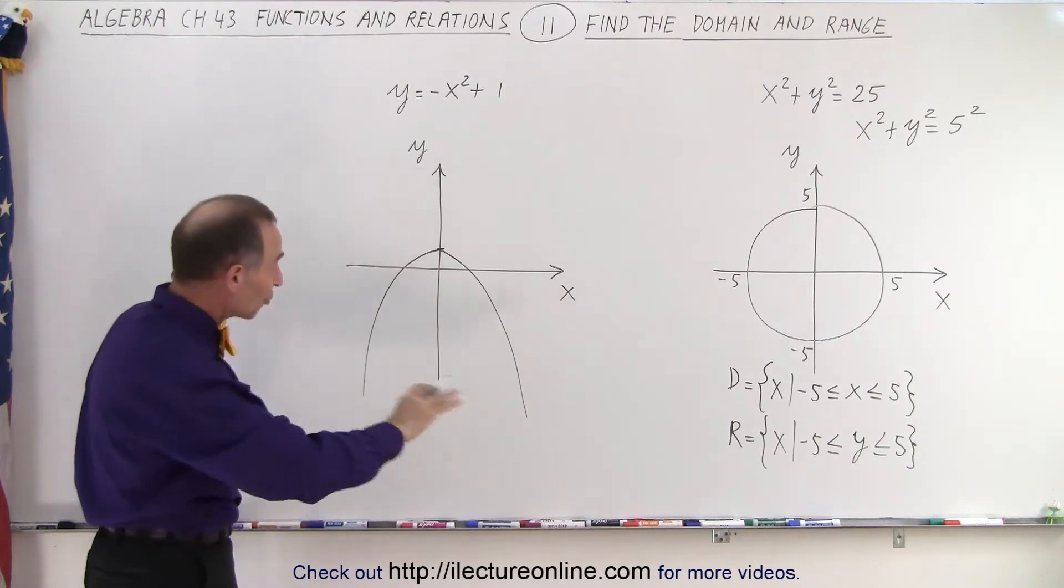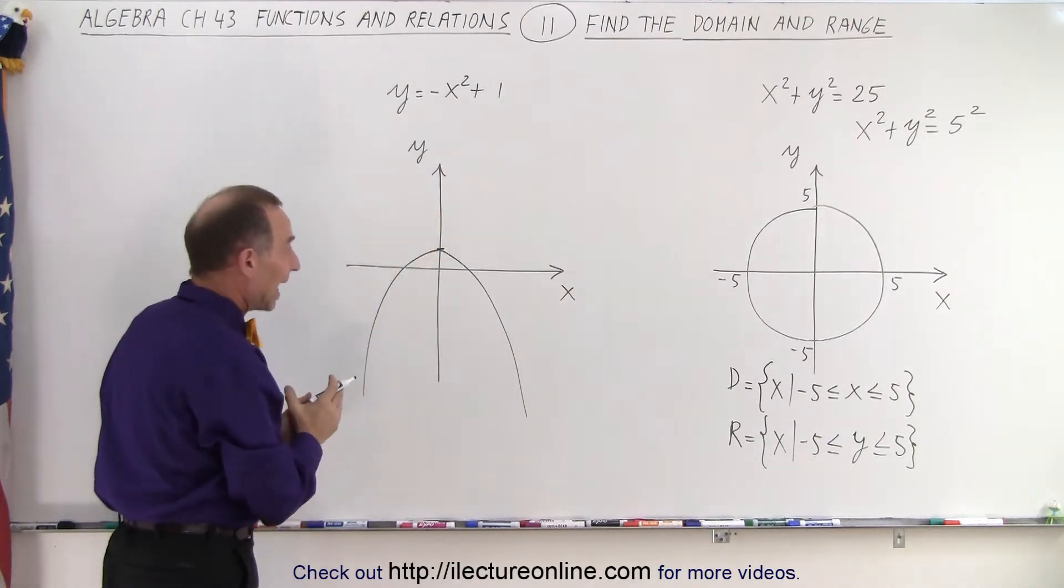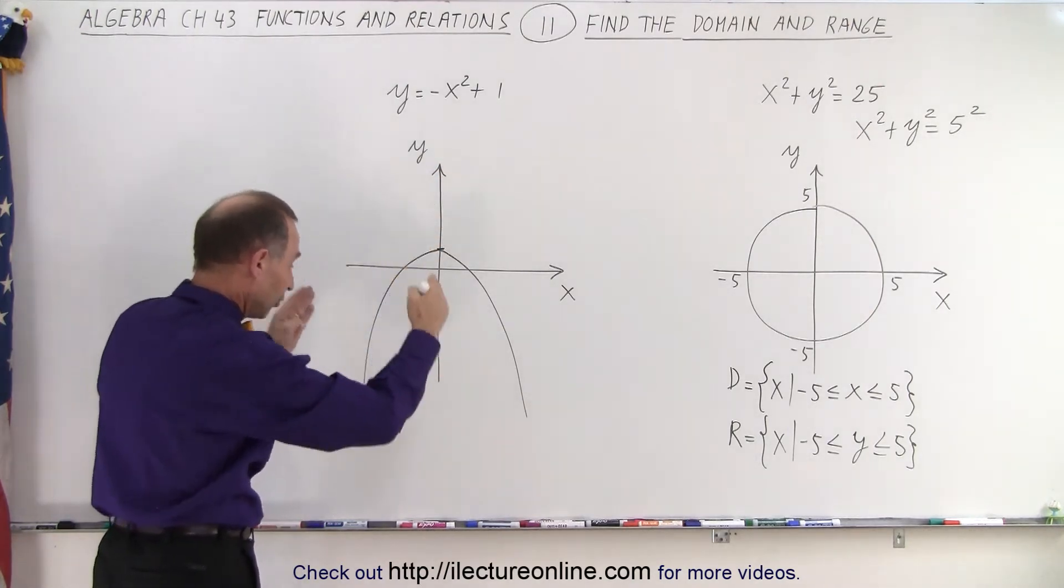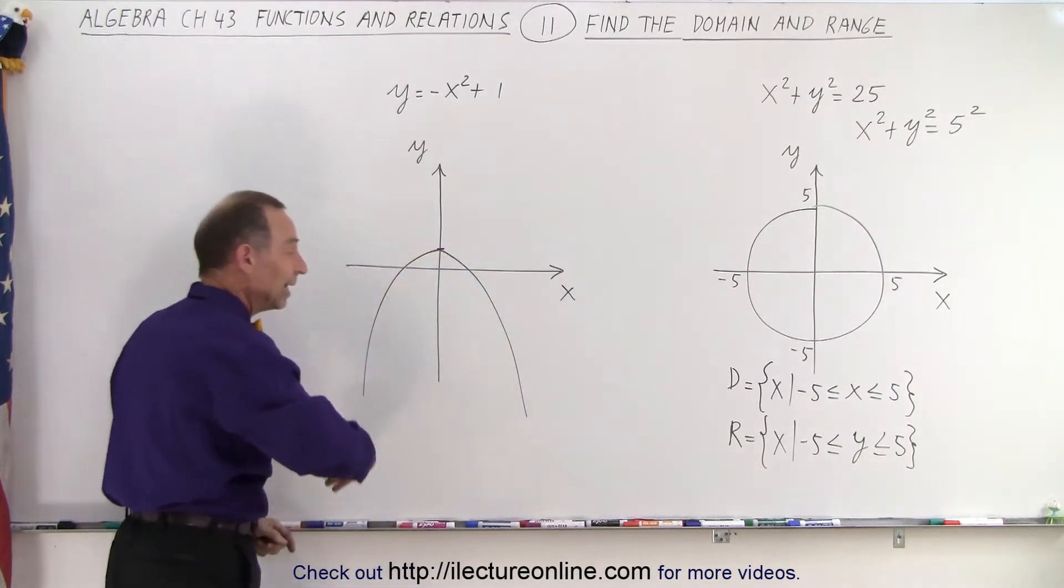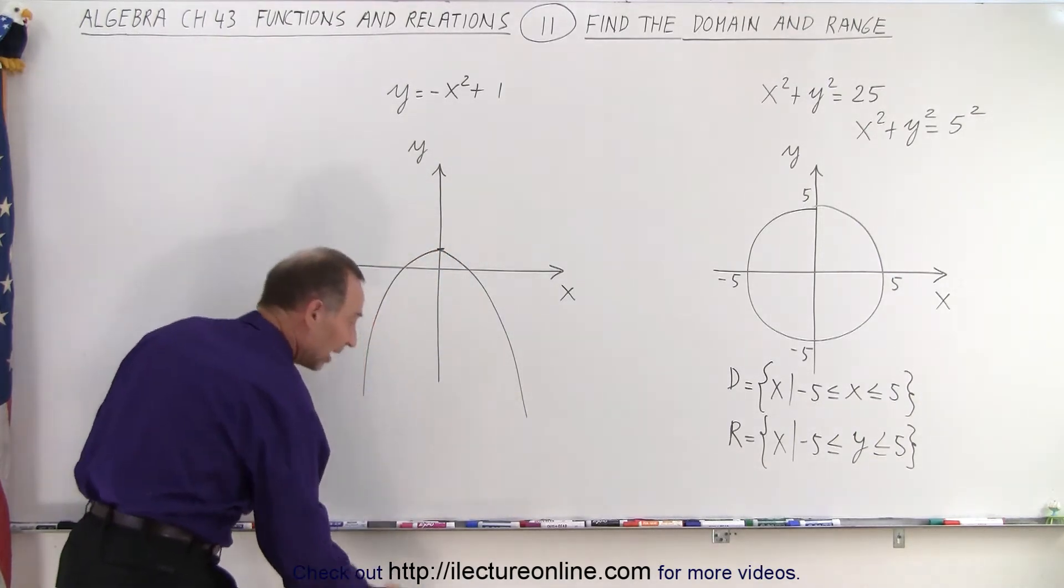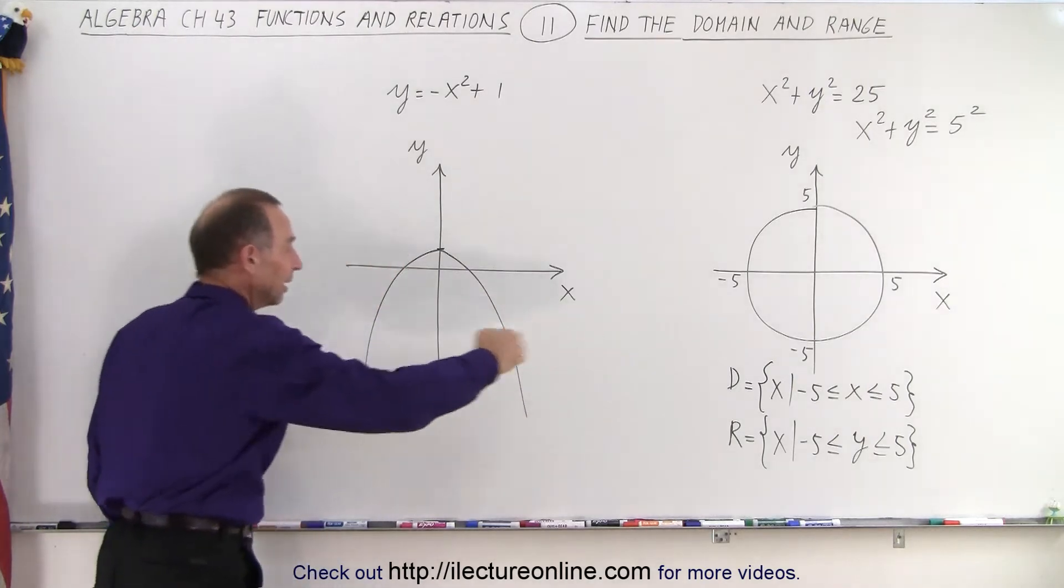Now we realize that in the x direction parabolas do not have any limitations. The further you go down the farther it goes to the right and to the left and in the limit as you go infinitely far down you will infinitely go to the right and infinitely to the left.